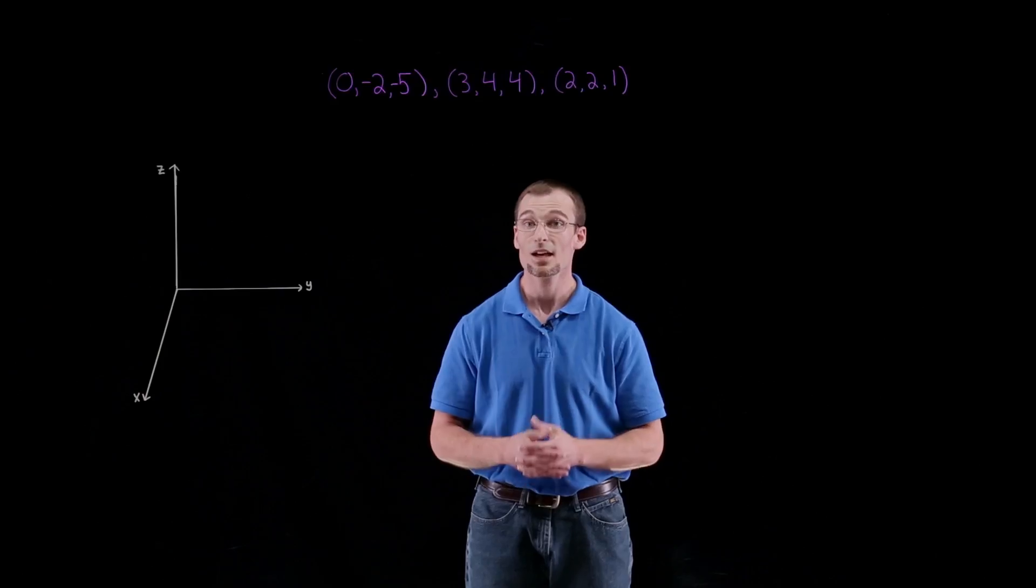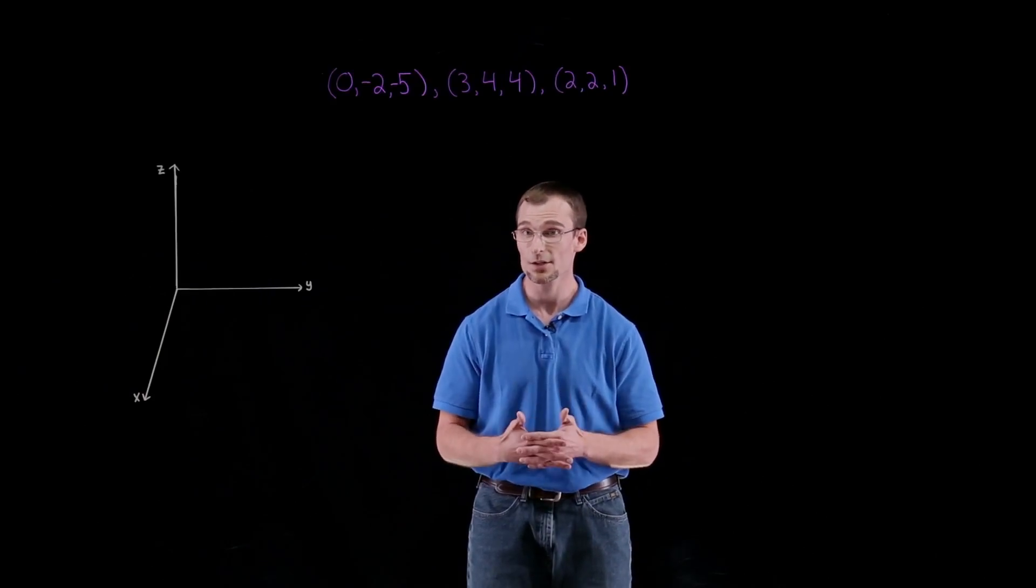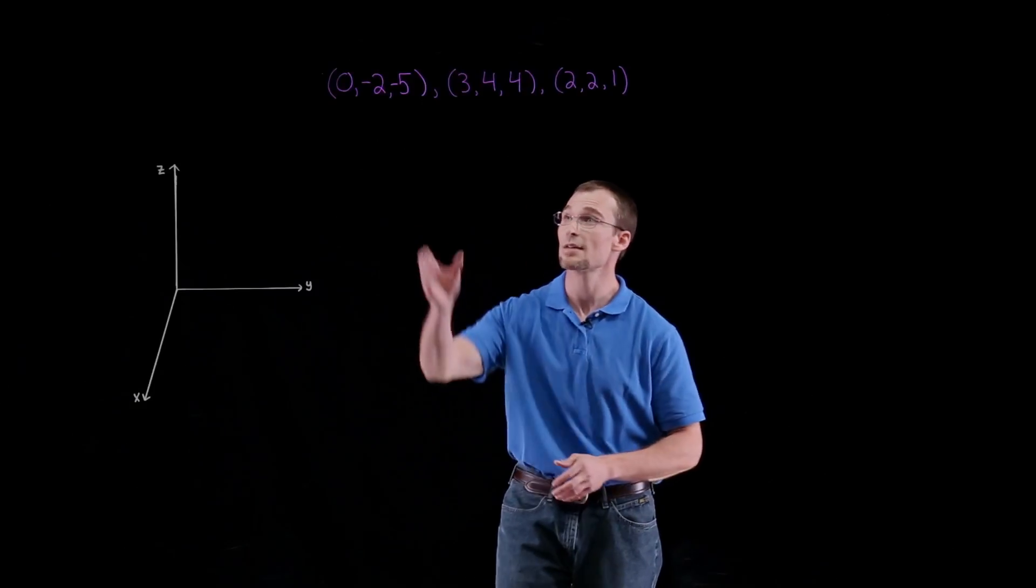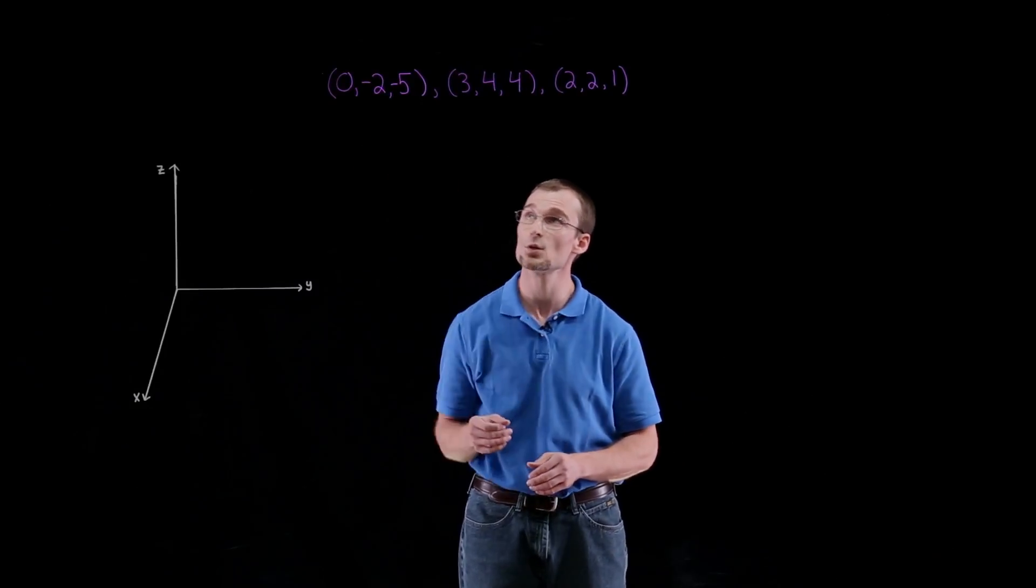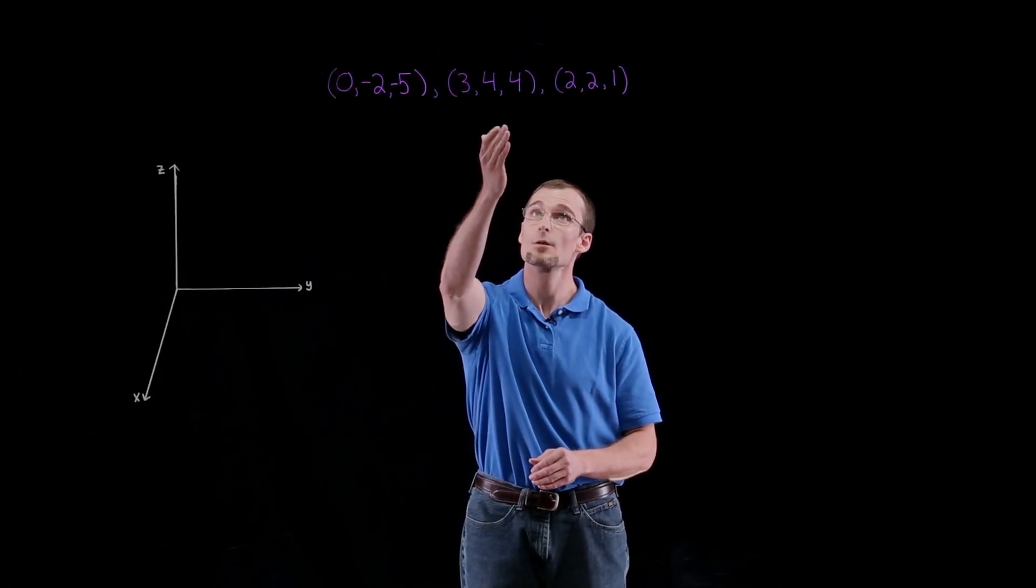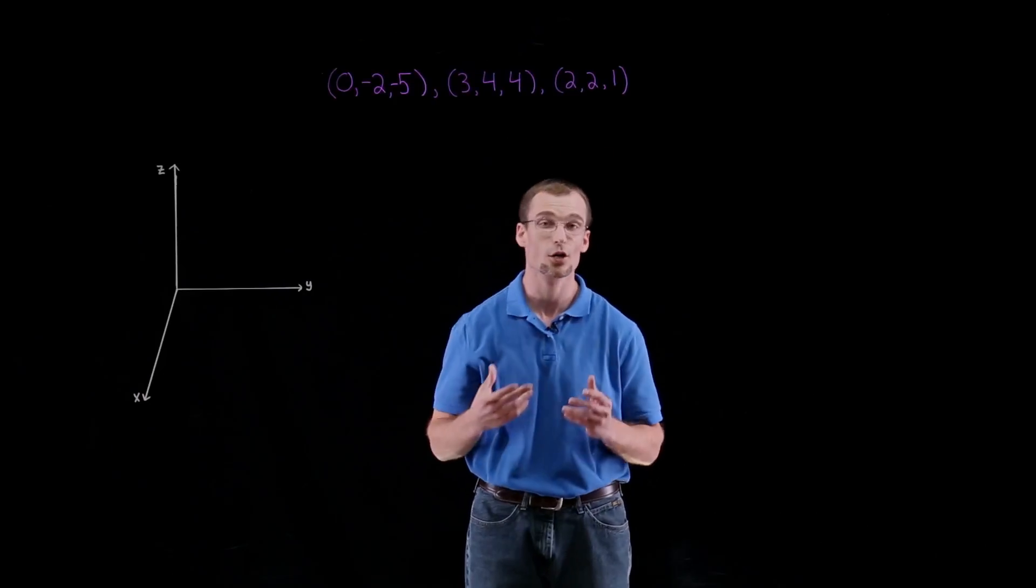Hello, everyone. I'm Adam. In this problem, we're going to be using vectors to show that our points given by the coordinates (0, -2, -5), (3, 4, 4), and (2, 2, 1) are collinear.